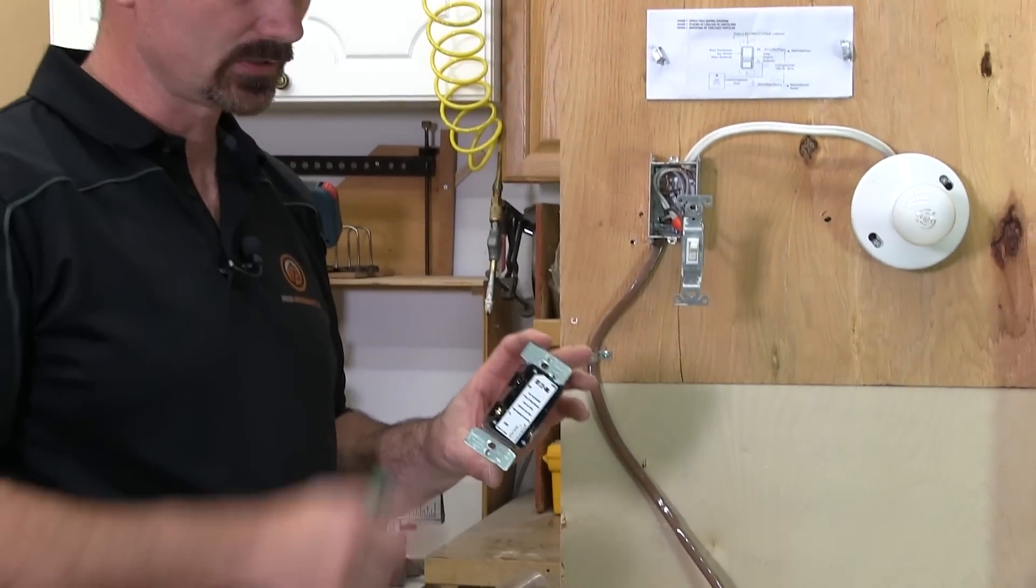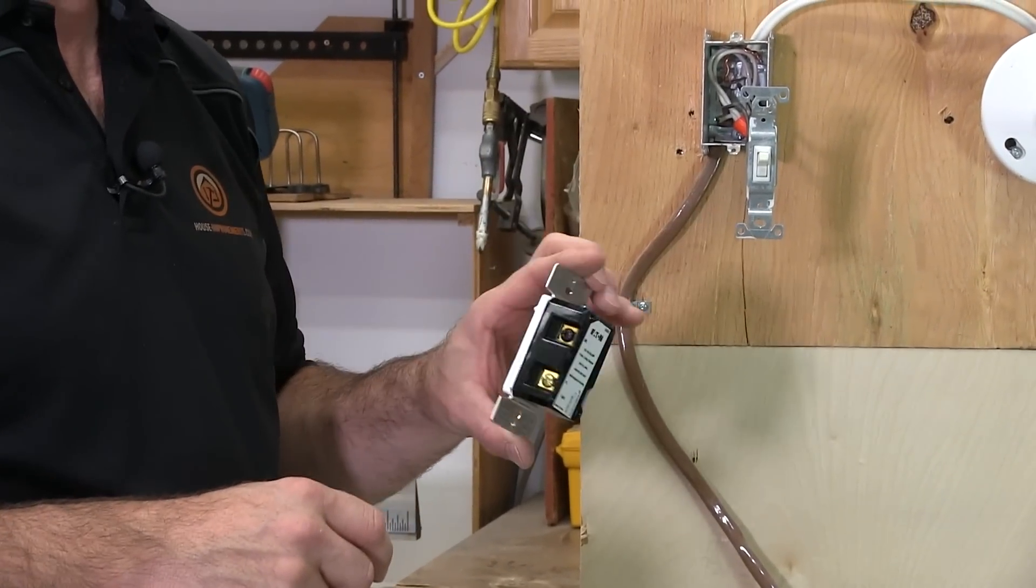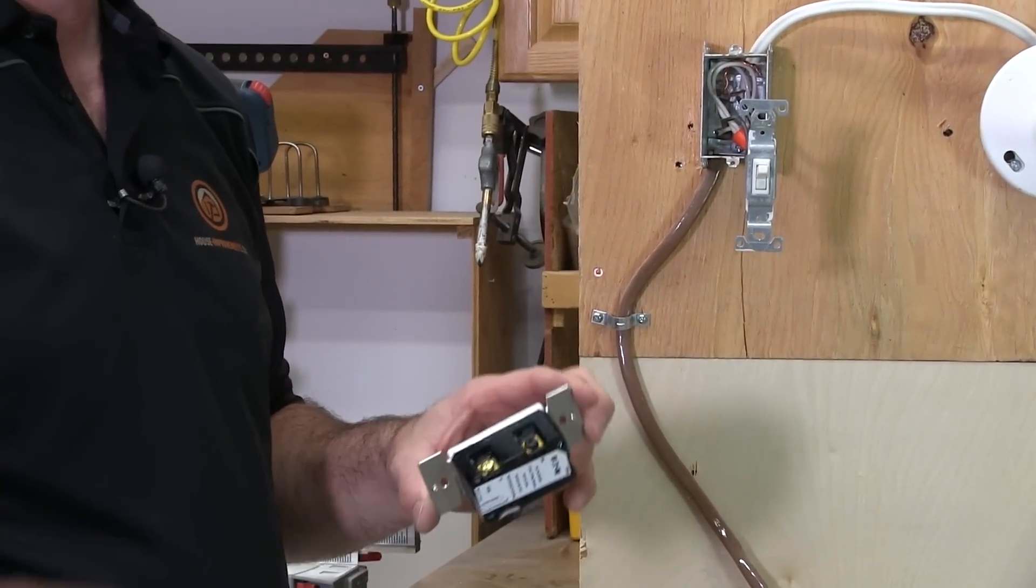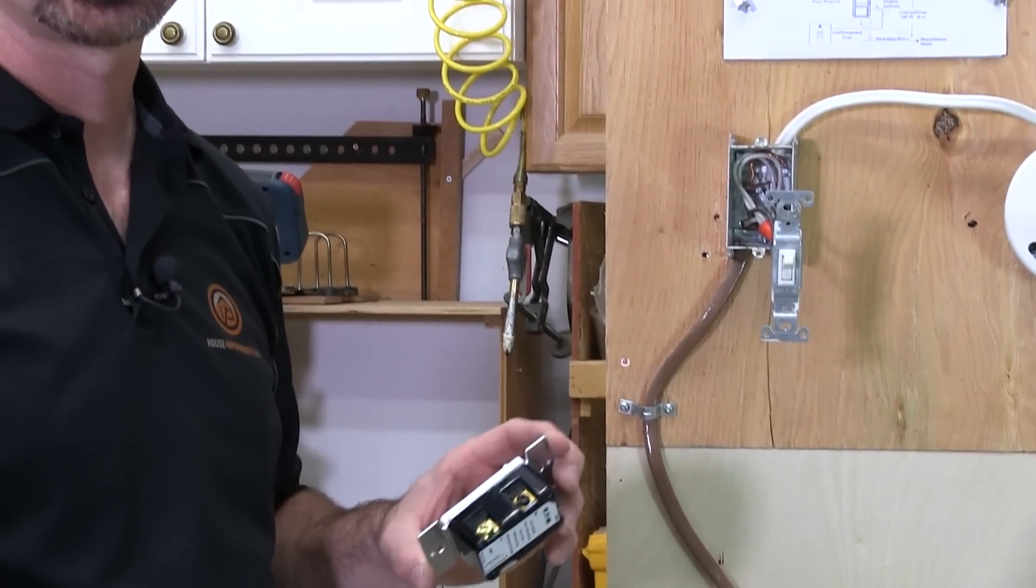Some dimmer switches will actually have wire leads coming off here that you'll use a wire nut to connect. This one, they actually use just standard terminals with a screw in it. So it's very much like what you're going to be taking apart.